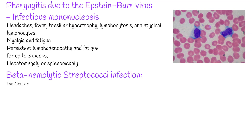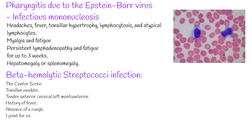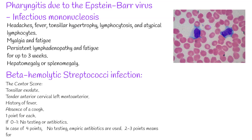The Centor score is one of the most commonly used tools for assessment of group A beta-hemolytic streptococci infection. Criteria include tonsillar exudate, tender anterior cervical lymphadenopathy, history of fever, and absence of cough — 1 point for each. If 0 to 1, no testing or antibiotics. If 4 points, no testing and empiric antibiotics are used. 2 to 3 points means further testing is required, such as a rapid antigen test. This test is more likely valid in ages 5 to 15 years and not valid under 3 years old.